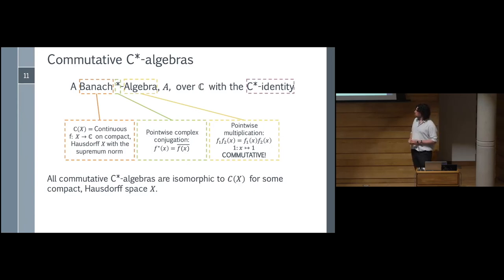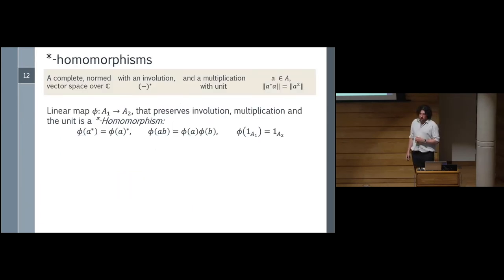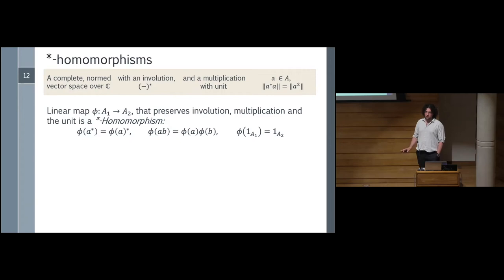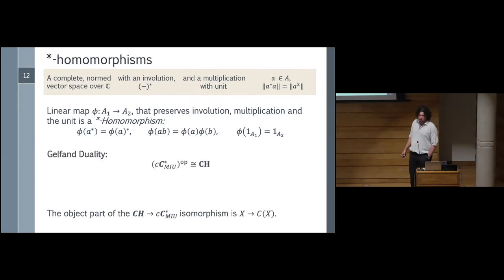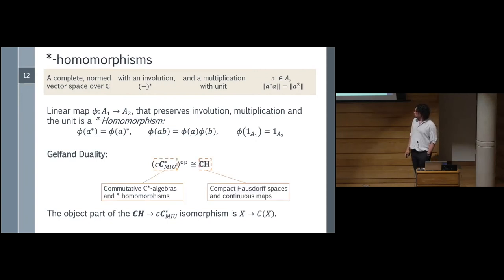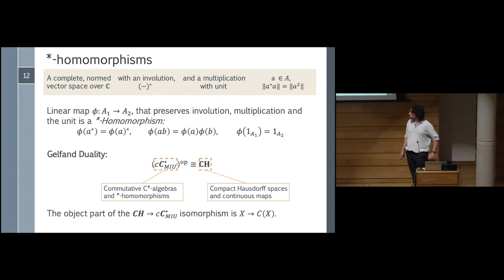This goes further once we start thinking about the maps on C*-algebras. The obvious thing is to look at linear maps, but one option is to ask that they preserve all the other algebraic structure as well — these star-homomorphisms extend the correspondence between compact Hausdorff spaces and C*-algebras to a duality of categories. These star-homomorphisms correspond to continuous maps on the topological side. We get a nice duality between an algebraic category and a spatial one. However, we might want to be more flexible — with only star-homomorphisms, a bunch of very simple spaces have no states at all. In fact, most of the matrix algebra spaces don't.